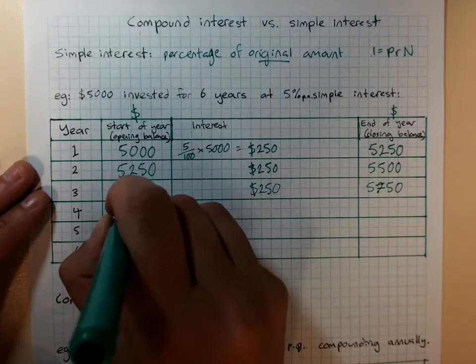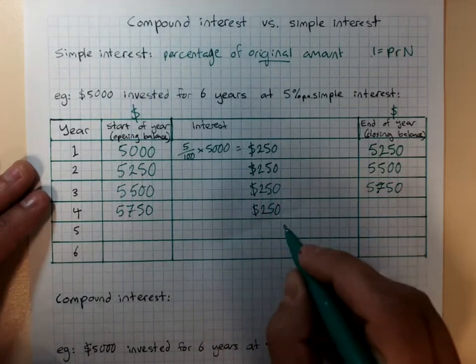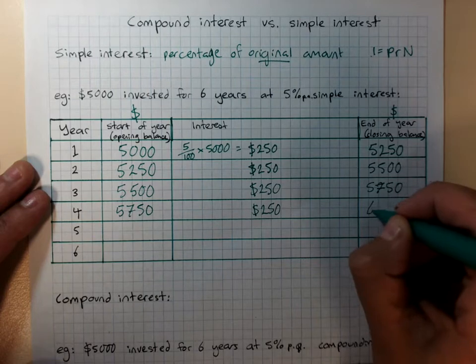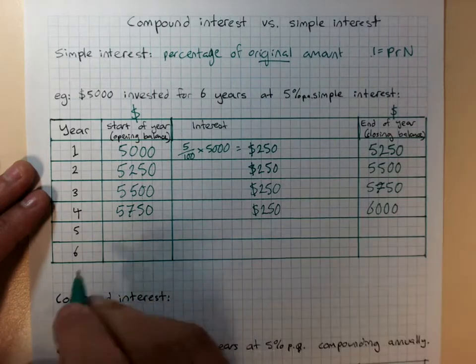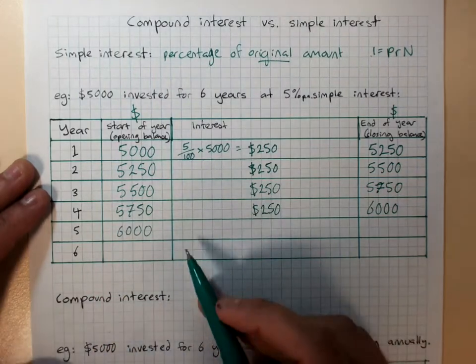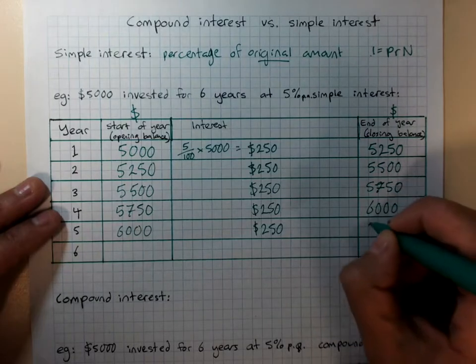Now, this isn't very fair. I'm only earning $250 a year, even though there's now $6,000 in my account, and before there was only $5,000 in my account. I should be earning more interest, because there's more money in my account.